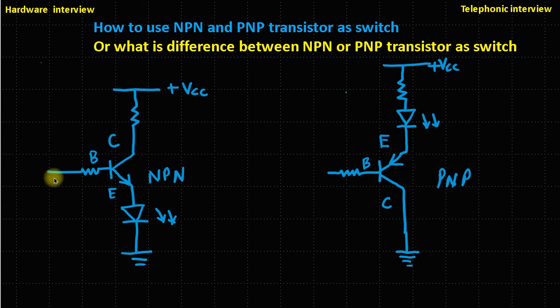Now let's talk about the biasing signal at the base. The NPN transistor always turns on at a high signal — whether that is 3.3 volt or 5 volt — and turns off at zero signal, zero volt.